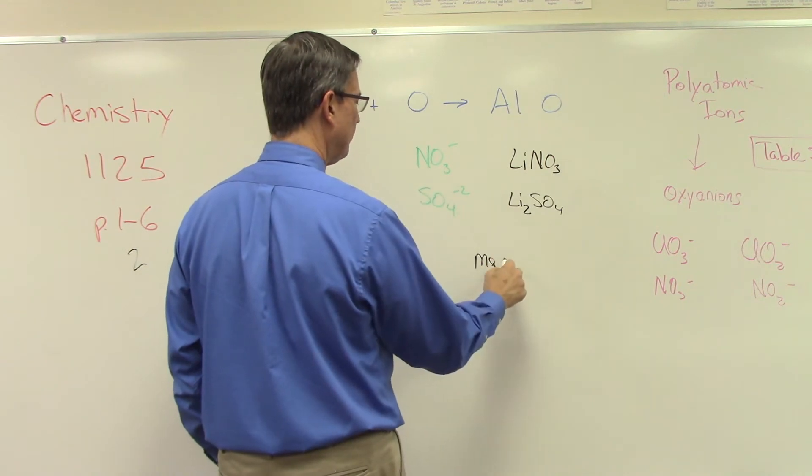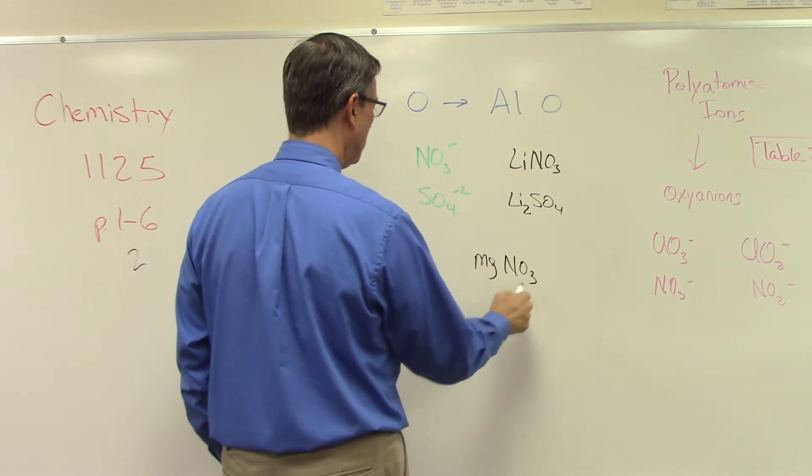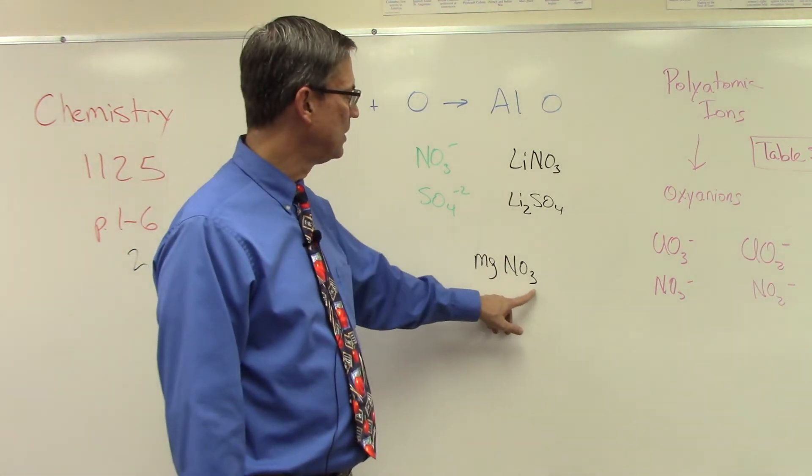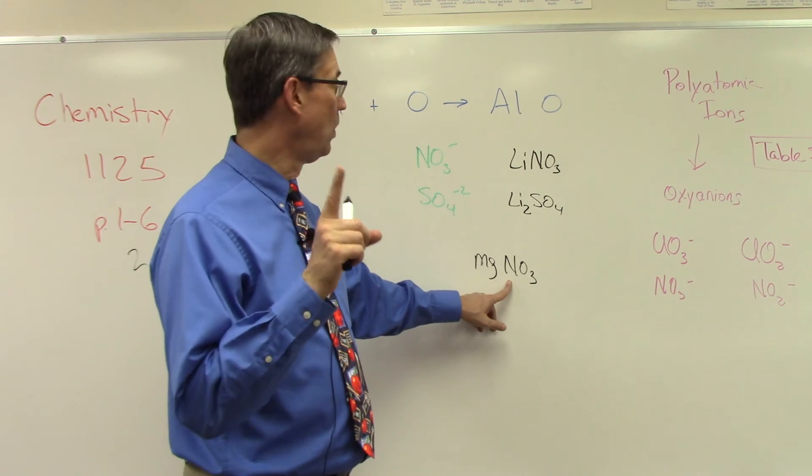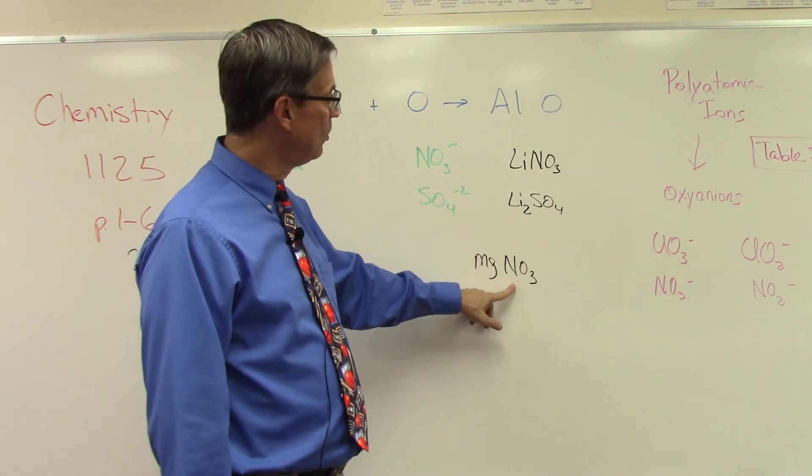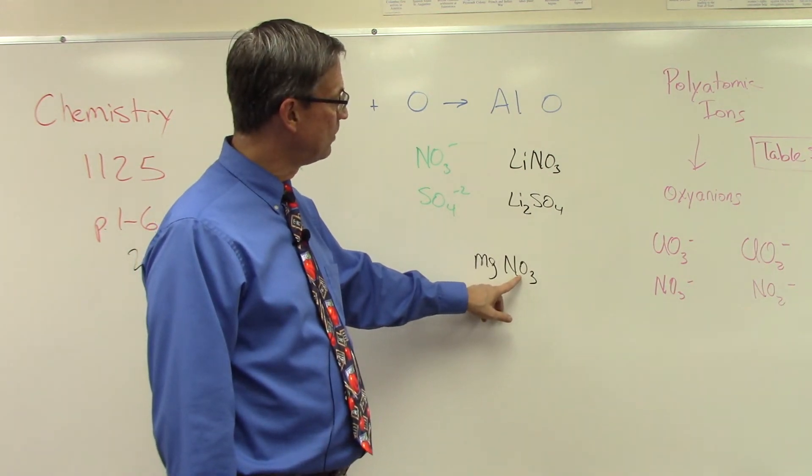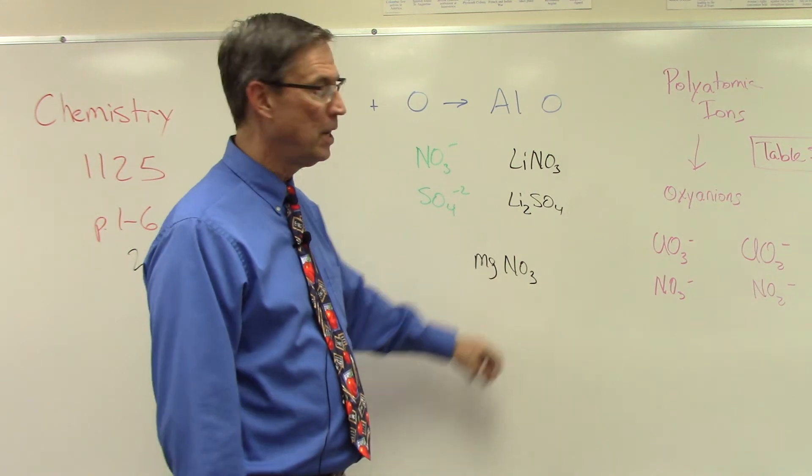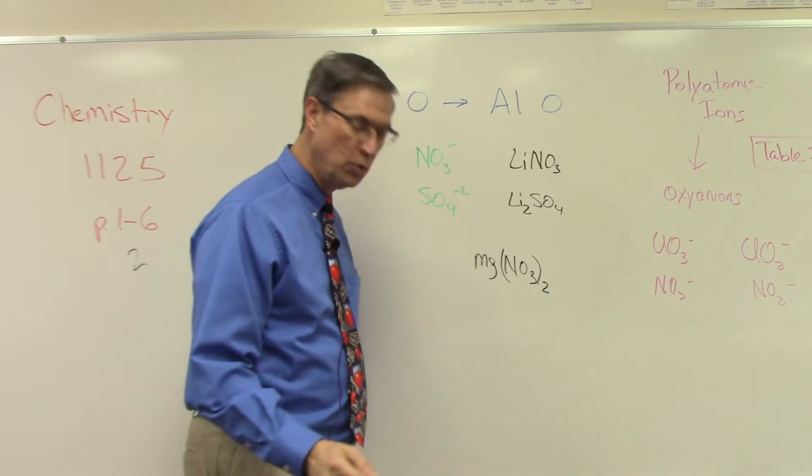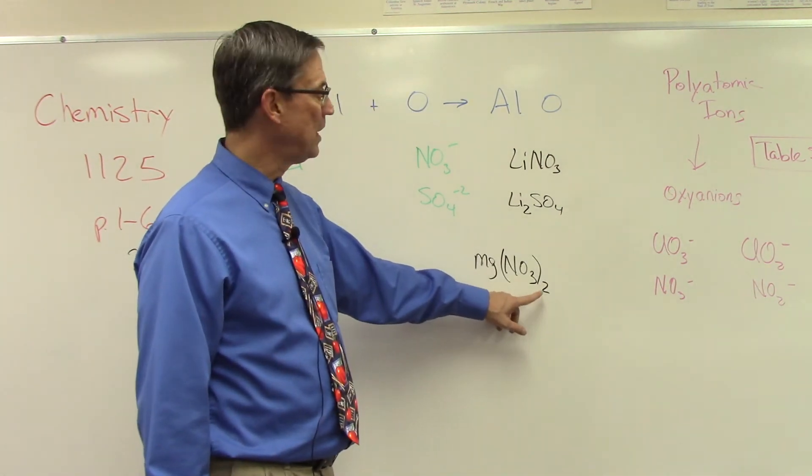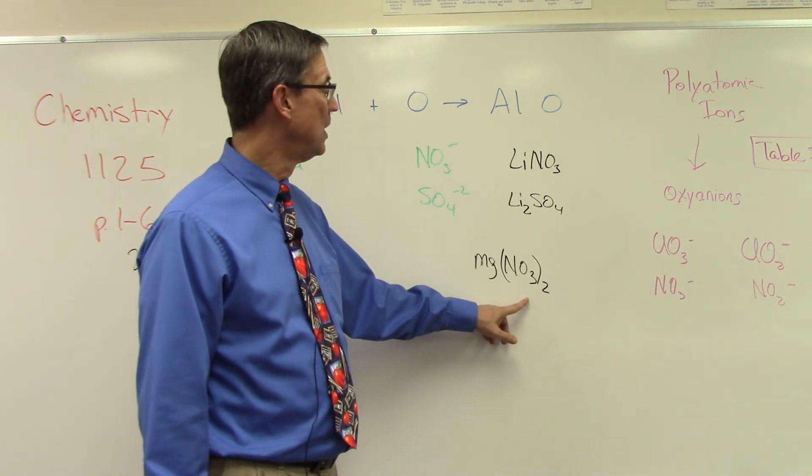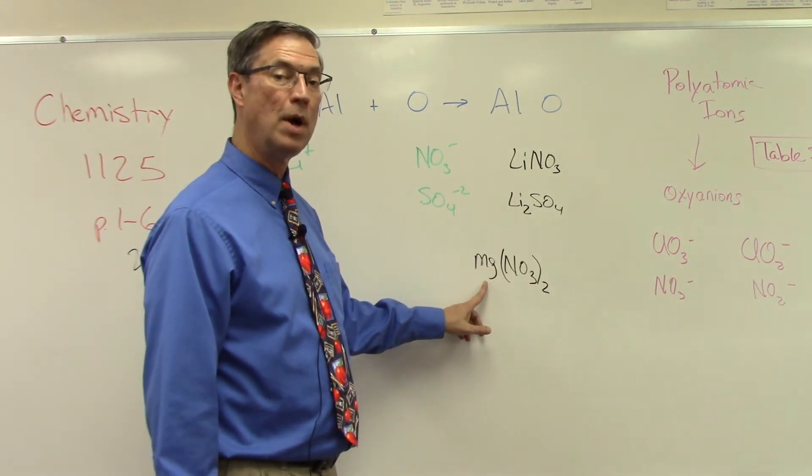Let me bring in magnesium and I'm going to put that one with the nitrate. I have a problem. Magnesium is positive two, nitrate, this gang, is negative one by itself. So I actually need two of these gangs. I don't go through and change the subscript here to two and change that to six, I don't do that. What we do is we put parentheses around this and put a subscript of two down here.